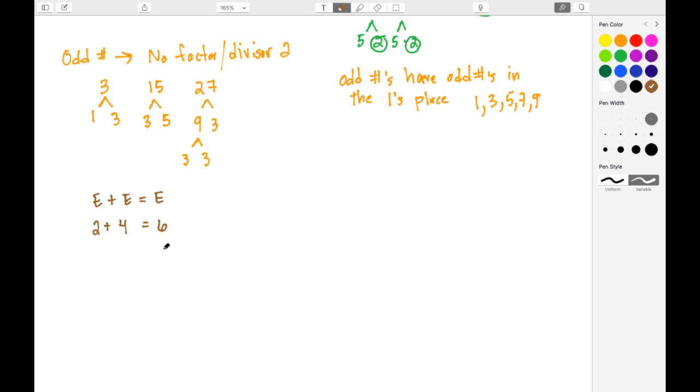For example, if we had 2 plus 4, that would give us 6 which we know is even. Another example would be 10 plus 10, and we see 10 plus 10 gives us 20, again another even number.